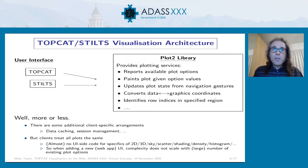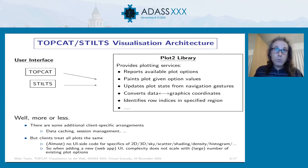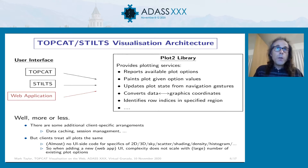This matches the way visualization is already done in TopCat and STILTS. Those are user interface layers which talk to a library internally called Plot 2. The Plot 2 library knows about all the different plot types, all their configurations, and how to generate images. The user interface layer is just tasked with asking the user how to fill in those configuration options, sending them back to the library, getting an image back, and displaying it to the user. When the user interacts with it, the UI says to the library: the user dragged the mouse from here to here — can you give me a new image? Given that, it's relatively straightforward to add a new user interface layer as a web application, and that's what I've done.